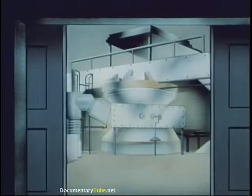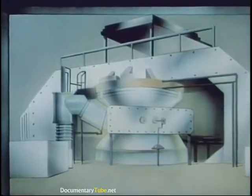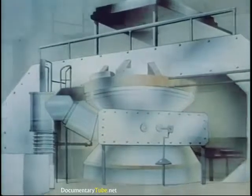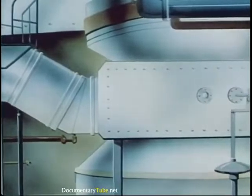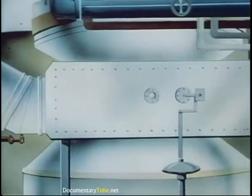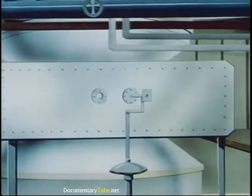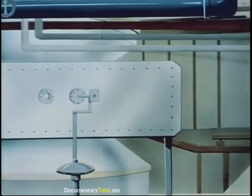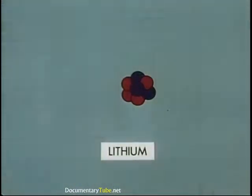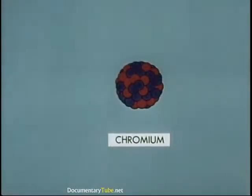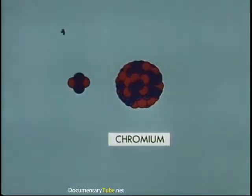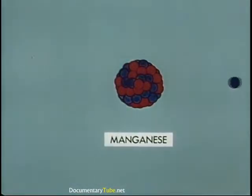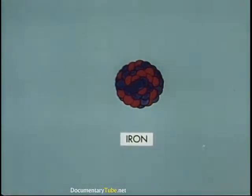So far we've been watching natural radioactivity. Man has stepped into the act, however, and in some cases outdone nature. Using as his guns cyclotrons and other accelerators, and employing hydrogen and helium nuclei, neutrons, protons, electrons, and other minute bullets, he has made stable matter unstable, producing radioactive isotopes of many elements. He transmutes lithium into helium with a hydrogen nucleus as the projectile. By striking the nucleus of a chromium atom with a helium nucleus, he changes it into radioactive manganese with the emission of a proton. Manganese, in turn, decays to iron with the emission of a beta particle and gamma ray.